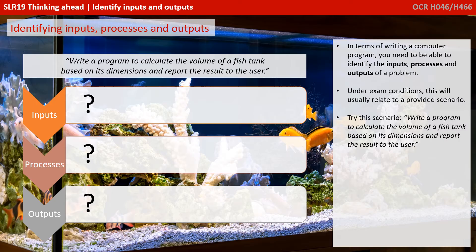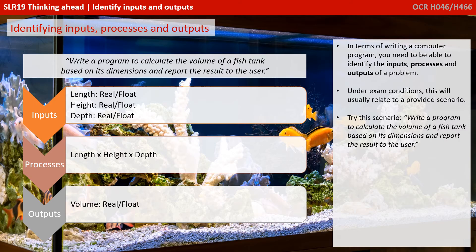So let's have a look at an easy scenario. Write a program to calculate the volume of a fish tank based on its dimensions and report the results to the user. We would require the user to input the length, height, and depth of the fish tank — assuming a cube-shaped tank, so it's quite a simple example. The process would be to multiply the length by the height by the depth, and the output would be a number, a real or float, representing the volume of the fish tank.